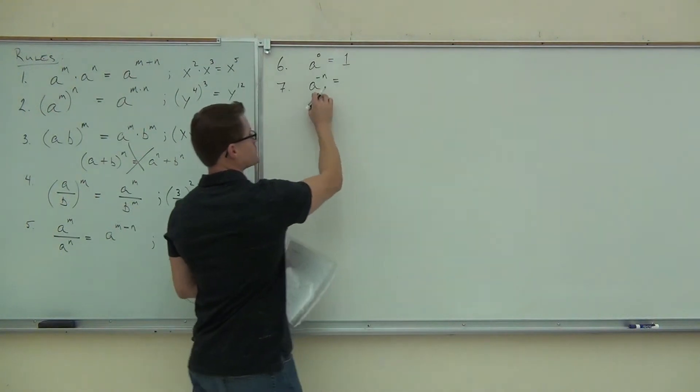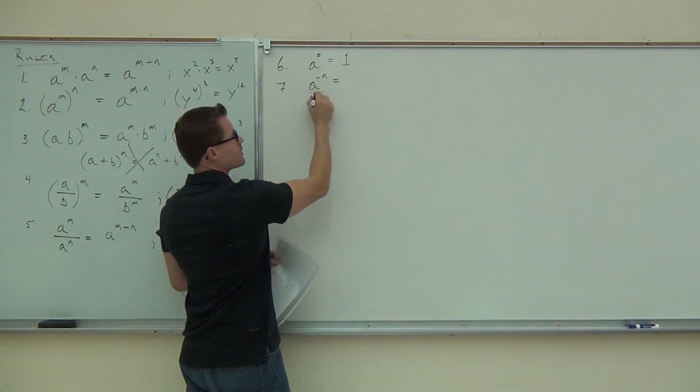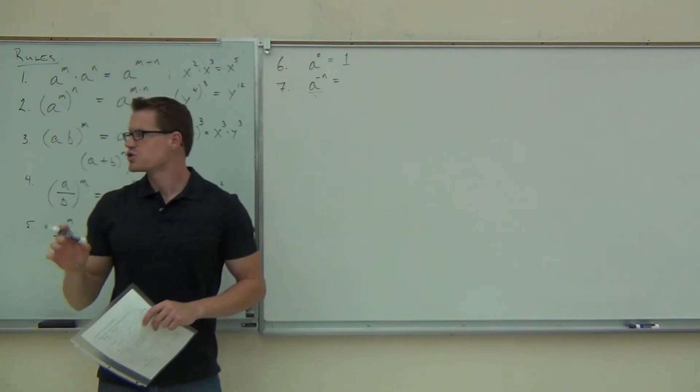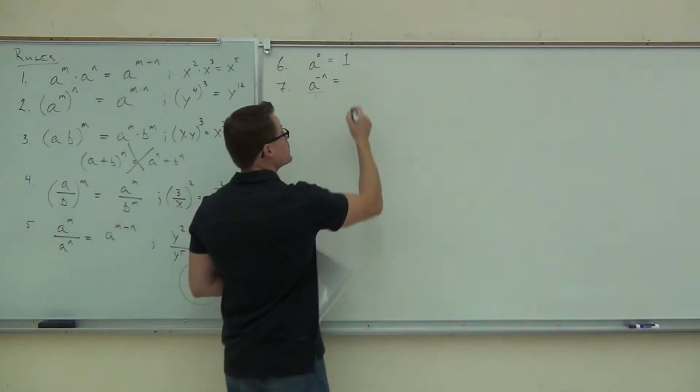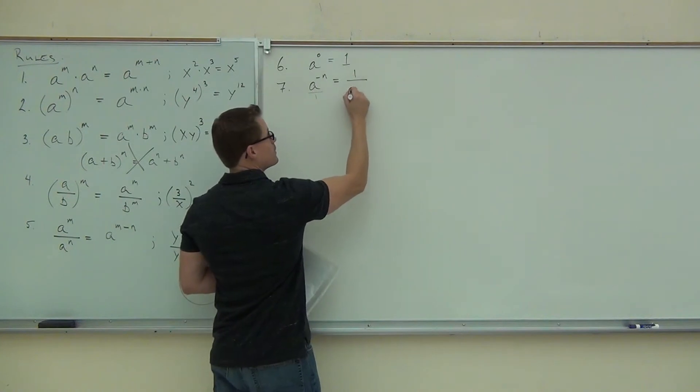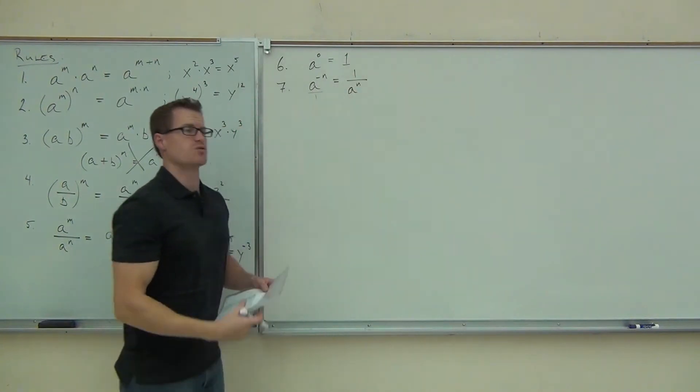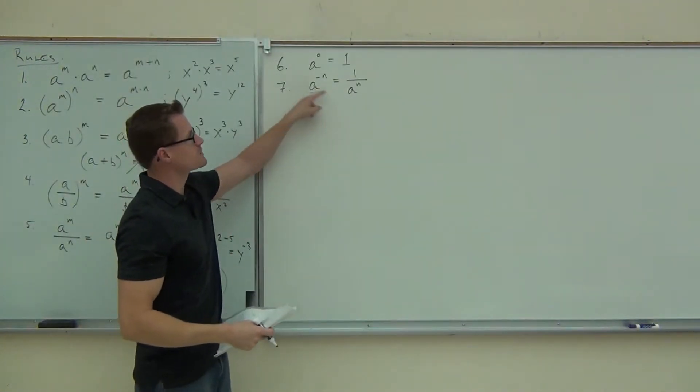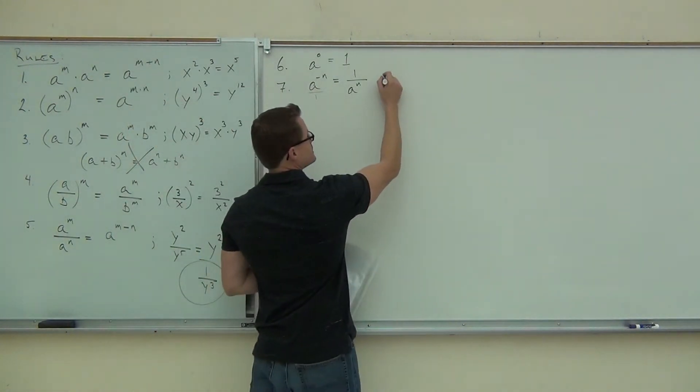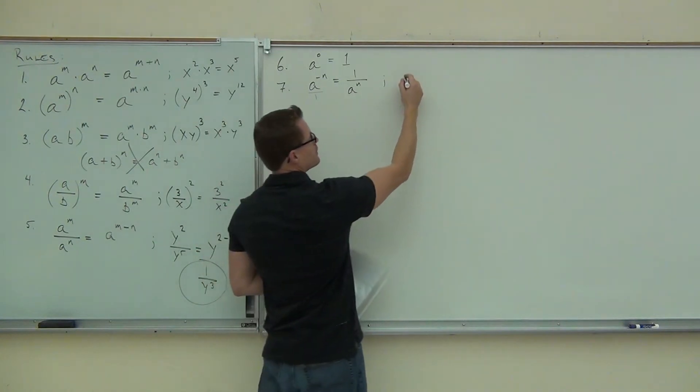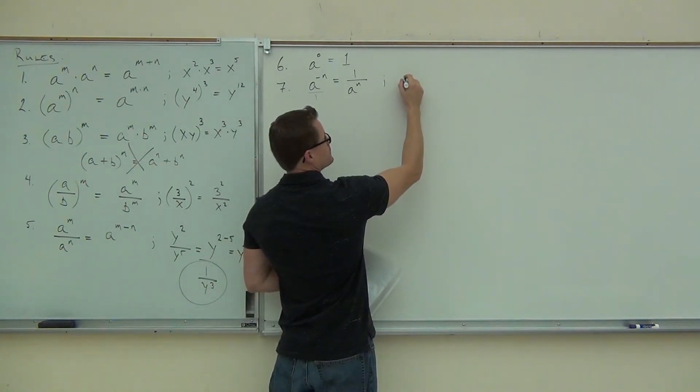So for instance right here, we consider this to be on a numerator because you can write that over one. If we want to change a to the negative n to a to the positive n, what we have to do is write this on the denominator of the fraction. Remember, recall from last time, that it doesn't change the sign of the number, just changes the sign of the exponent. And we did several examples, but I'll give you another one over here.